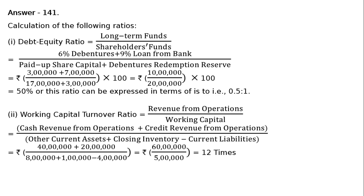That is equal to Rs. 40 lakhs plus Rs. 20 lakhs, whole divided by Rs. 8 lakhs plus Rs. 1 lakh minus Rs. 4 lakhs. That is equal to Rs. 60 lakhs by Rs. 5 lakhs. That is equal to 12 times.